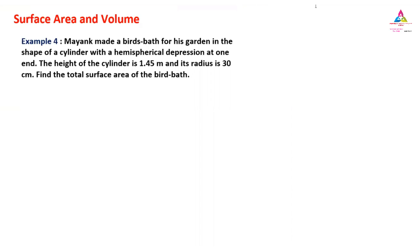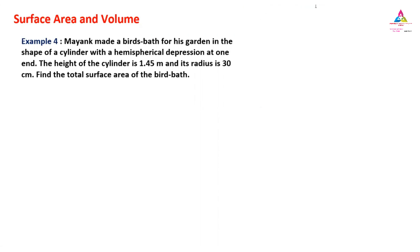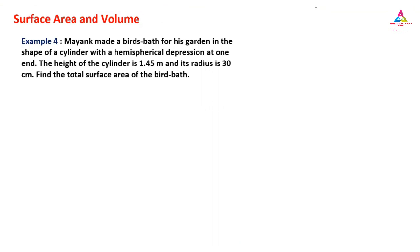Coming to surface area and volume, example number four. The problem says: my uncle made a bird's bath for his garden in the shape of a cylinder with a hemispherical depression at one end. The height of the cylinder is 1.45 meters and its radius is 30 centimeters. Find the total surface area of the bird bath.